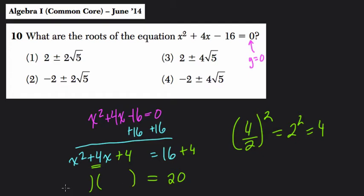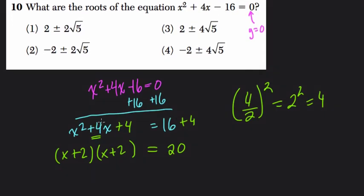And now we factor our beautiful perfect square trinomial, which is (x + 2)(x + 2). Again, you're just looking for numbers that multiply to 4, this constant, and add to the coefficient of x. So that's (x + 2)² = 20, right? (x + 2) times itself is (x + 2)² equals 20.